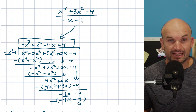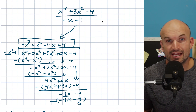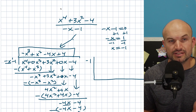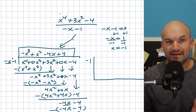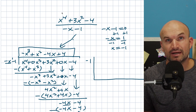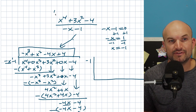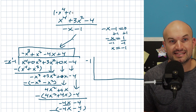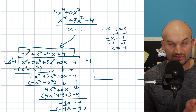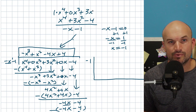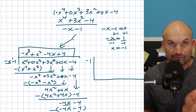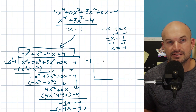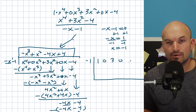Let's see how synthetic division looks for this problem. Set the divisor equal to zero and solve for k. Since the dividend is missing x³ and x terms, it helps to rewrite it with all terms: 1x⁴ + 0x³ + 3x² + 0x − 4. If a term is missing, remember its coefficient is 0. The coefficients and constant to plug into the synthetic division bar are: 1, 0, 3, 0, and negative 4.